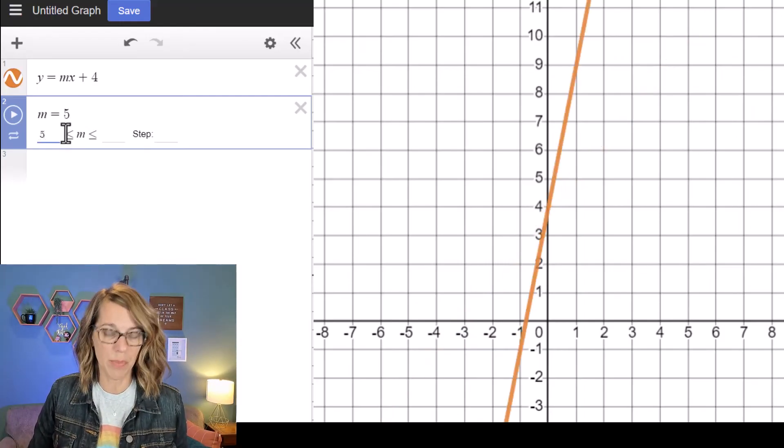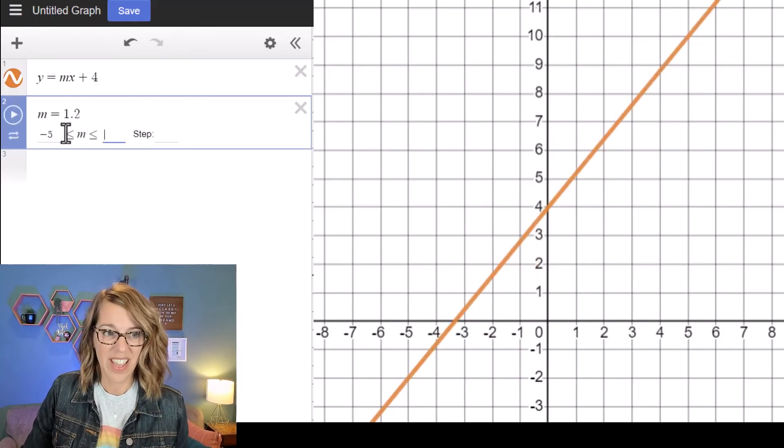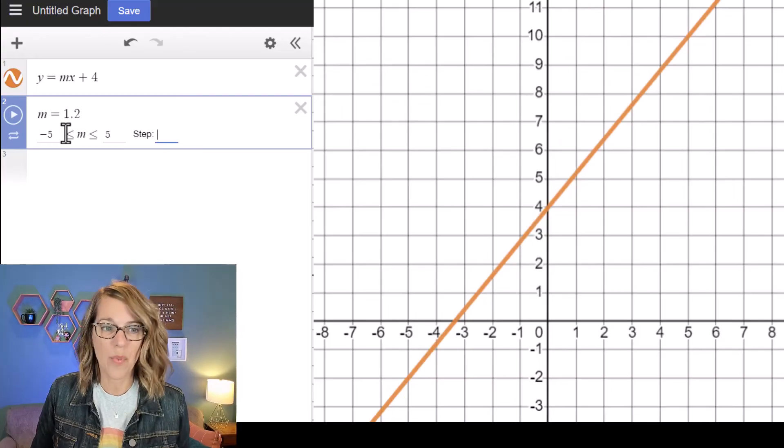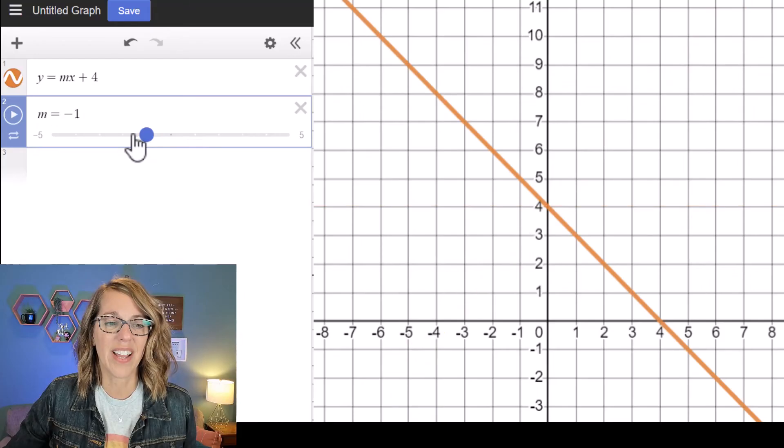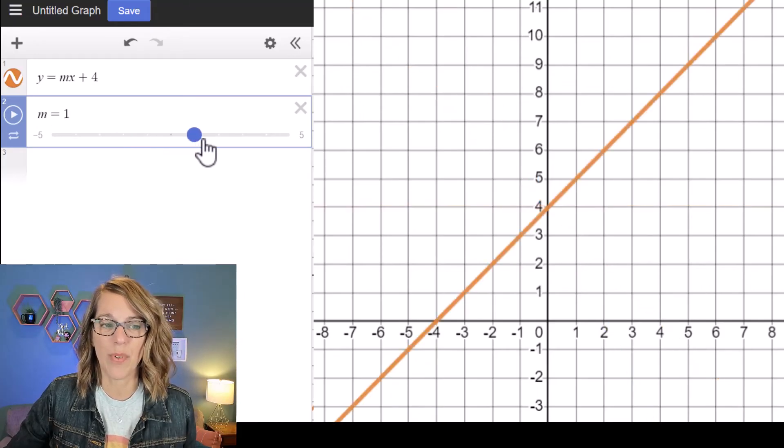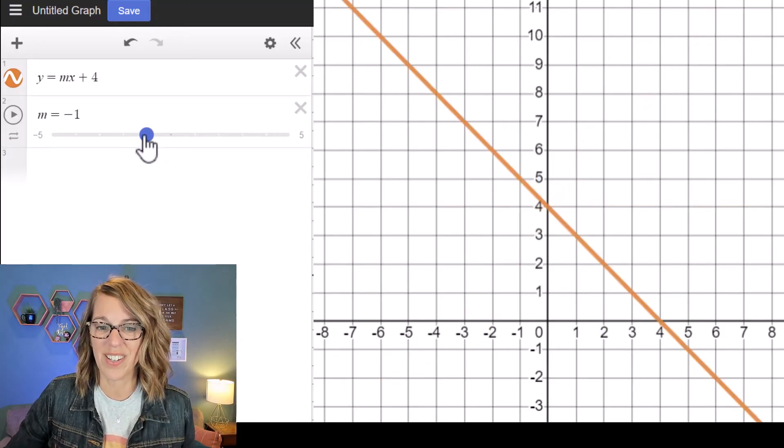So say I just want to explore between negative 5 and 5 instead, and I want it to go with a step of 1. So back to my slider now. My slider now is going to just explore those different slopes.